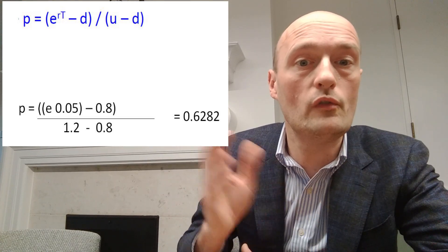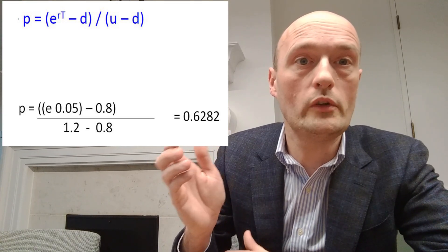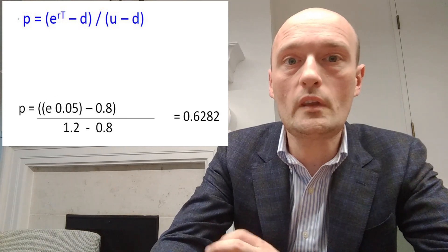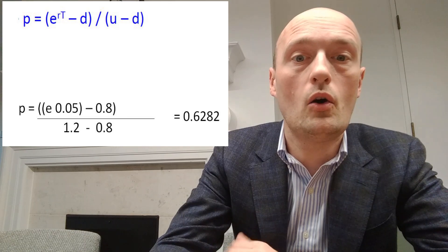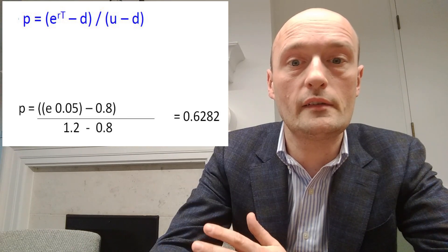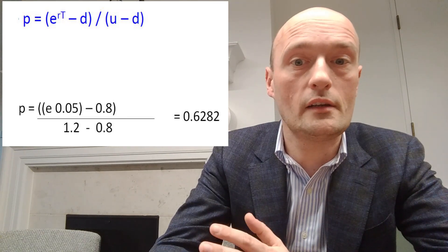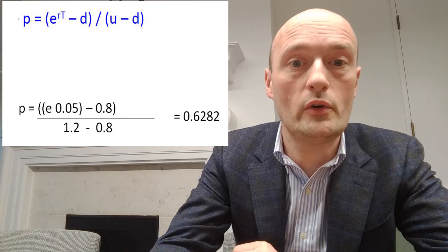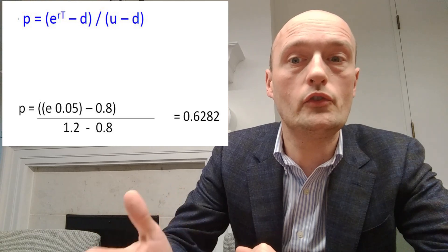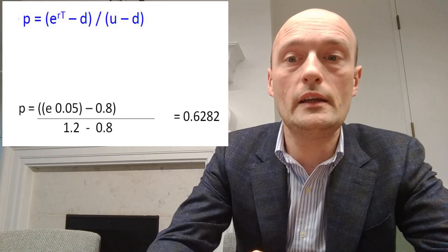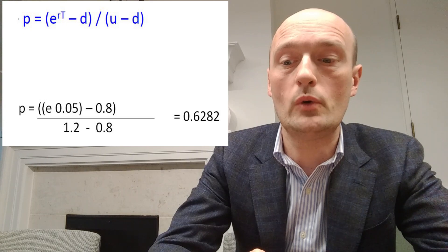And so once again I explained in the last video that we're getting u and d from the magnitude of the up and down move. So it can either move up by 1.2, it moved from 20 to 24 per step, or it moved from 20 to 16, which to get to 16 you have to multiply 20 by 0.8. So that's where u and d came from. And when we do that calculation we calculate that P equals 0.6282.